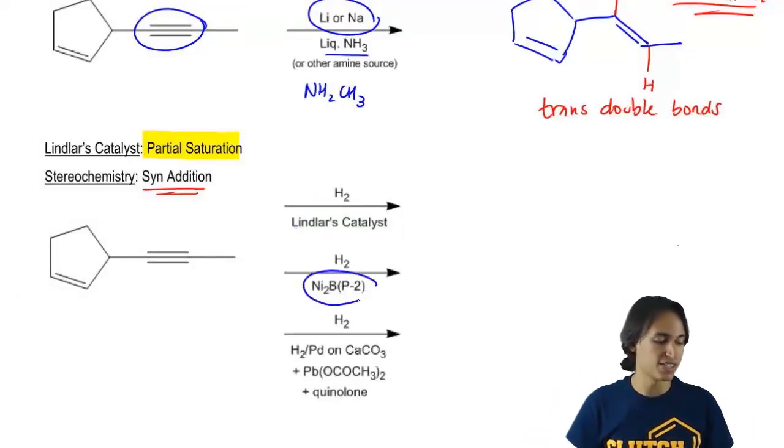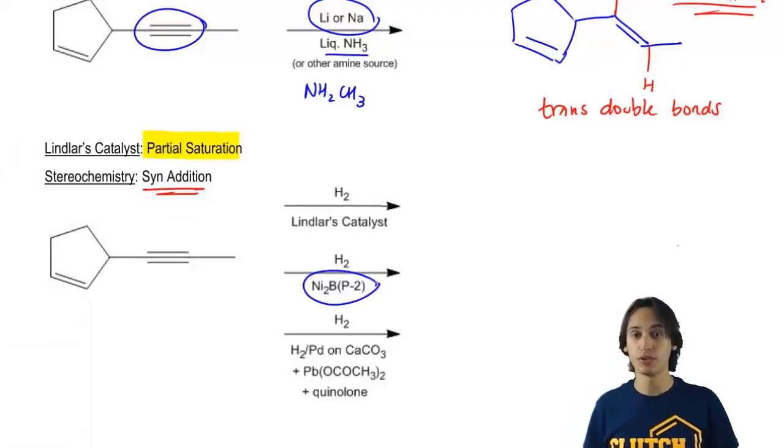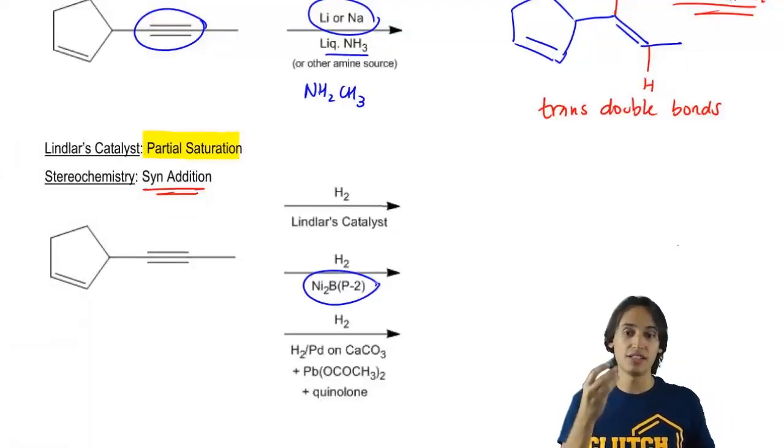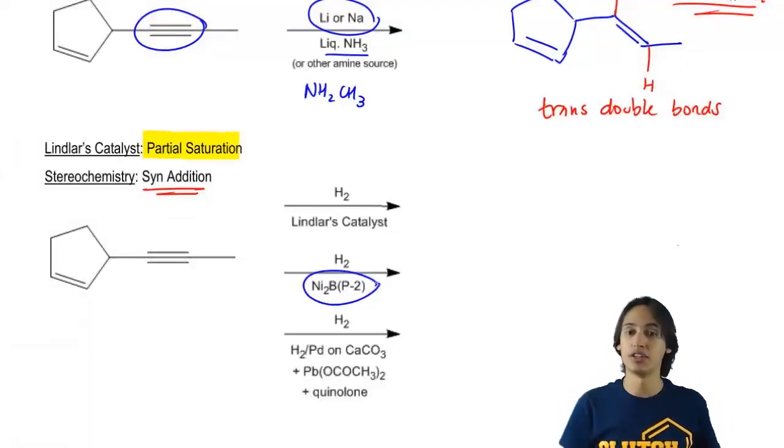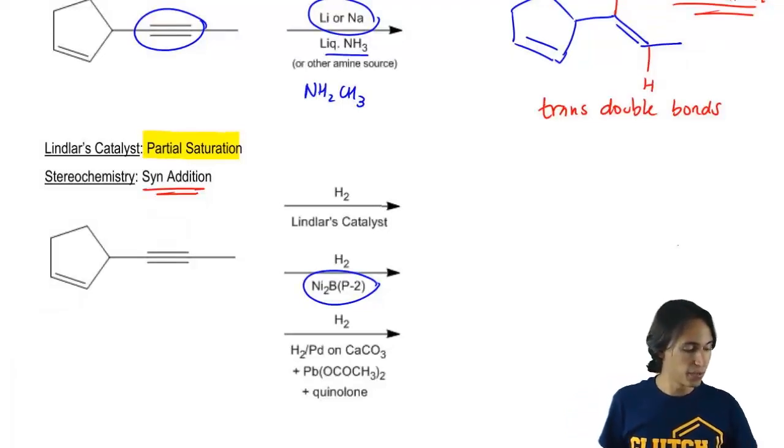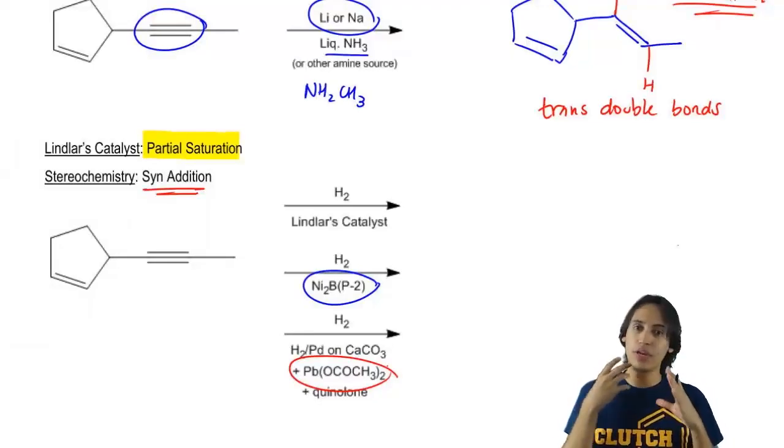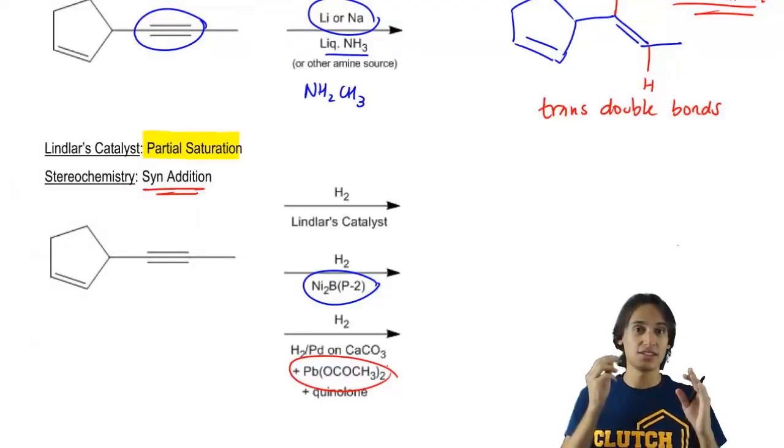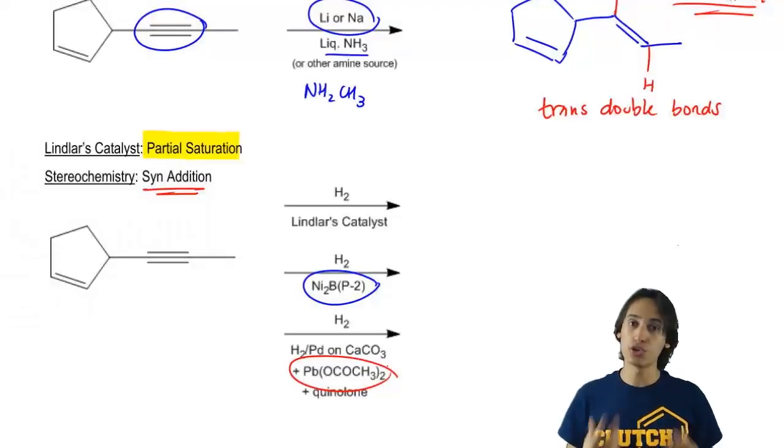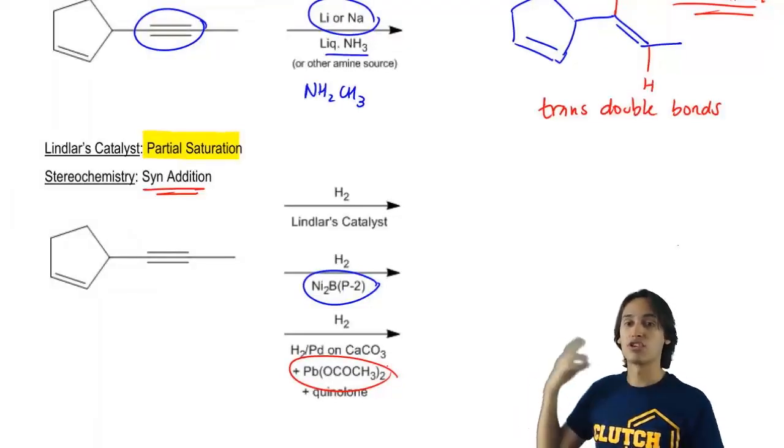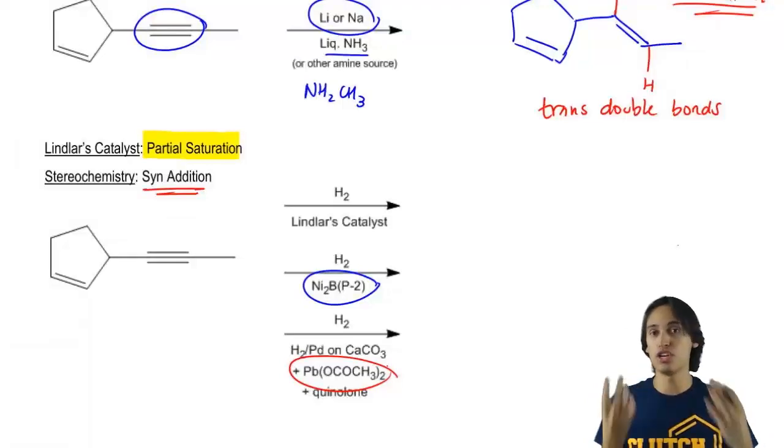But some professors are going to use the actual reagents that are in the textbook. So some textbooks have this as the P2 catalyst. So the P2 catalyst is one form of Lindlar's. Another form is actually with lead acetate and quinoline. These are reagents that you just have to recognize that they are Lindlar's. You don't need to know exactly what they look like or draw them or even know the mechanism.